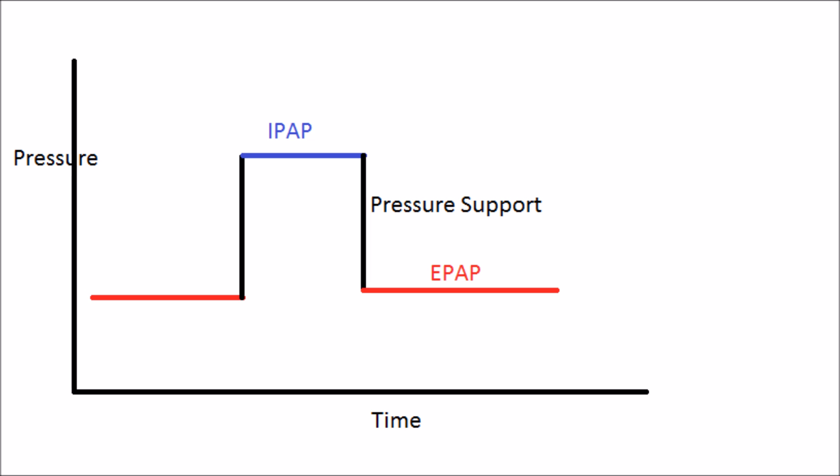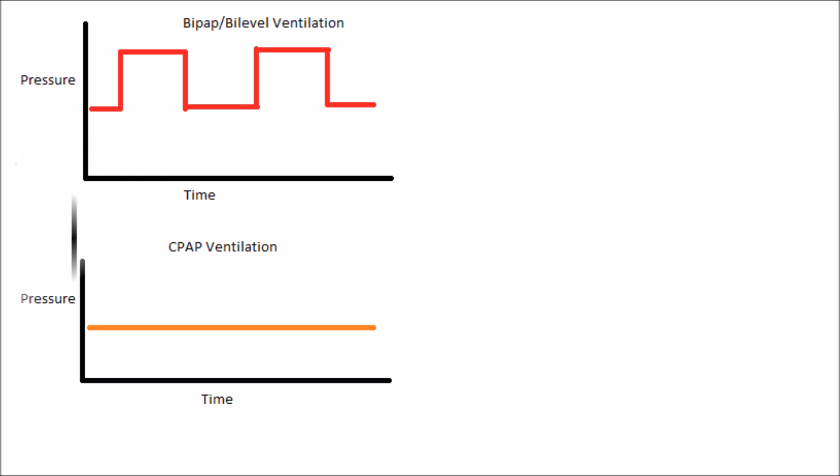Bi-Level Positive Airway Pressure consists of an IPAP — your P-high or P-peak — and an EPAP, a P-low, or your CPAP level. The difference between the IPAP and EPAP is the pressure support. More pressure support means the lungs can open more, which causes more oxygenation and more ventilation of the lungs.